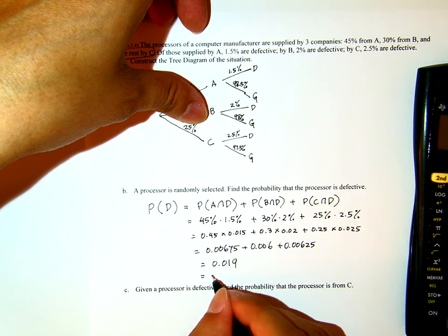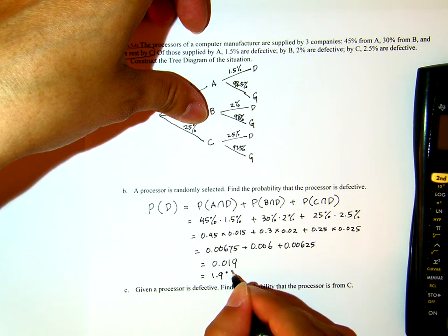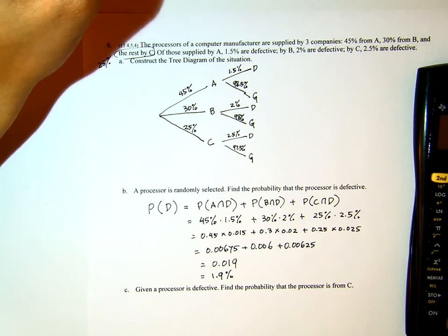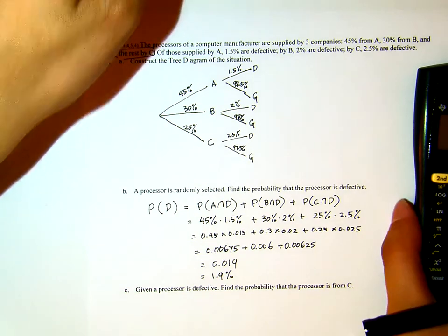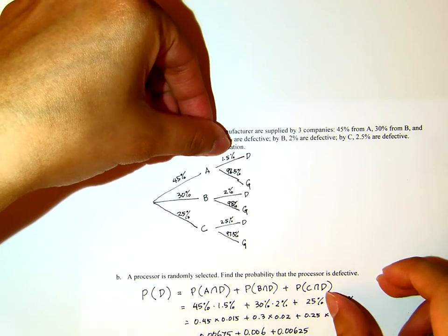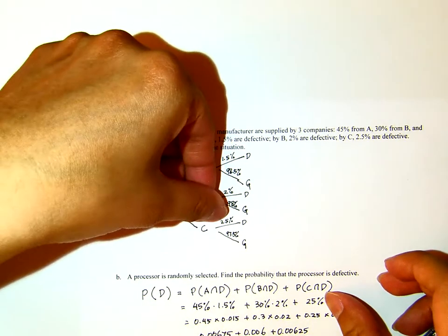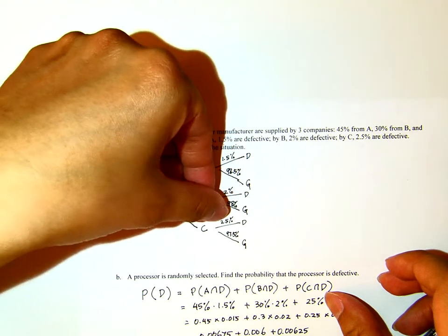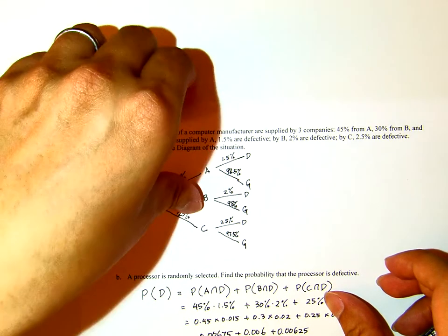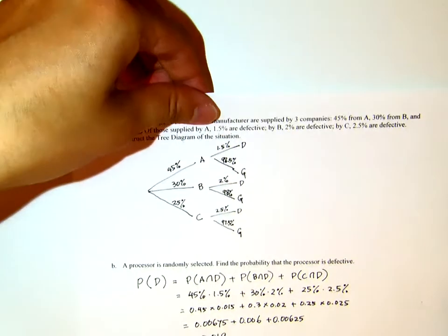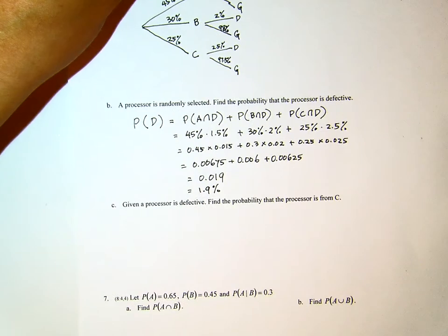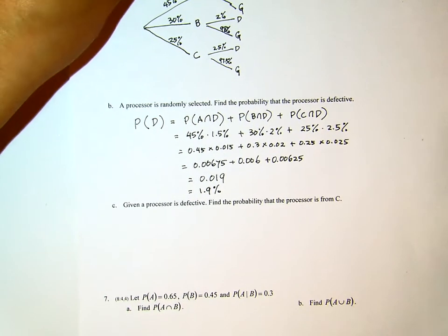Which means that's 1.9% chance you get something defective. Okay? Now, we do expect that the number will be between the smallest percent and the largest percent. It will be between 1.5 and 2.5. Okay? That's for the probability to get a defective processor if you randomly select one.